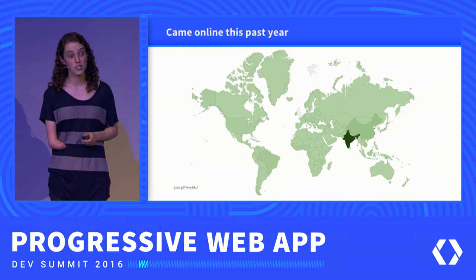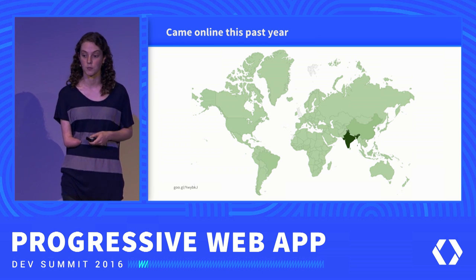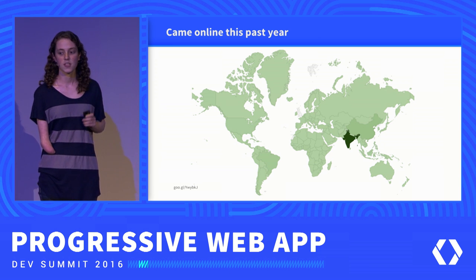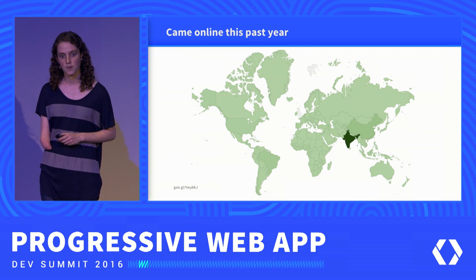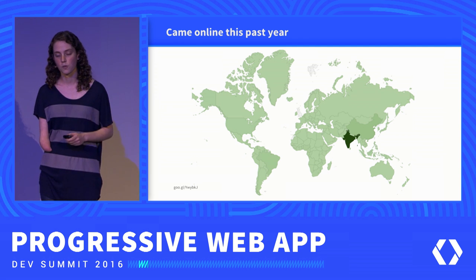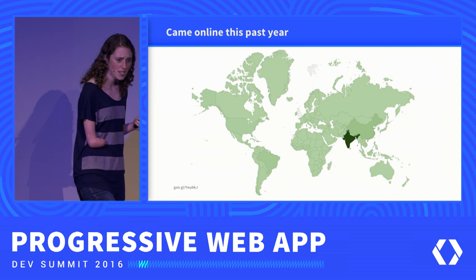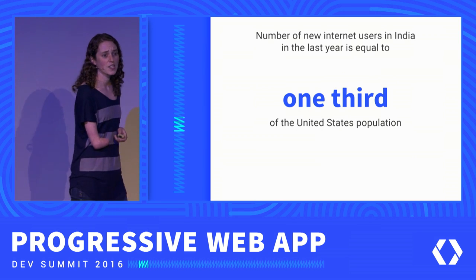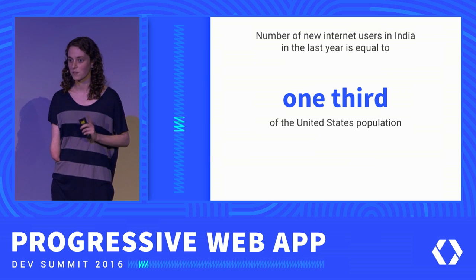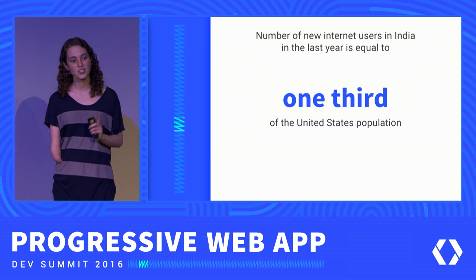For India, this was actually a growth of 30% year over year. And this growth was 10 times more than the growth we saw in China in terms of absolute users, and over 100 times more than the growth we saw in any other country over the last year. Just to put this in context, this growth in India in a single year was equal to one third of the entire United States population — and that's just in one year.